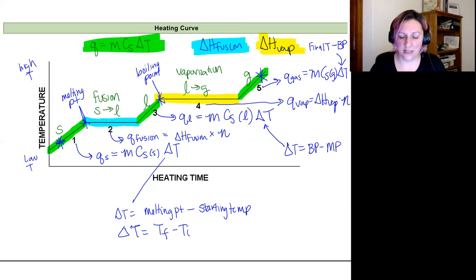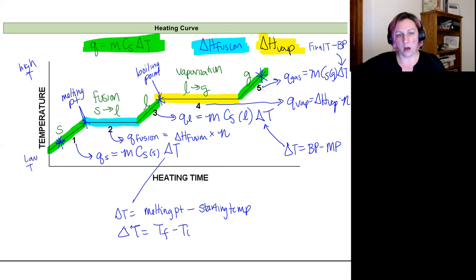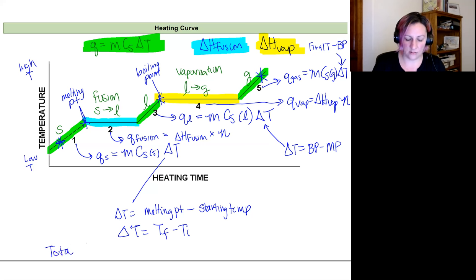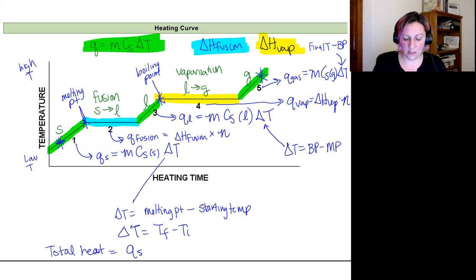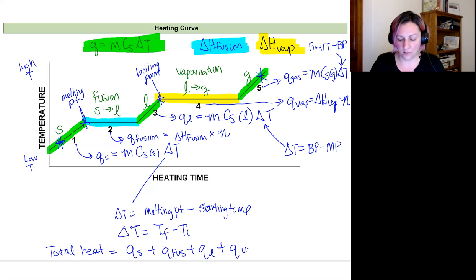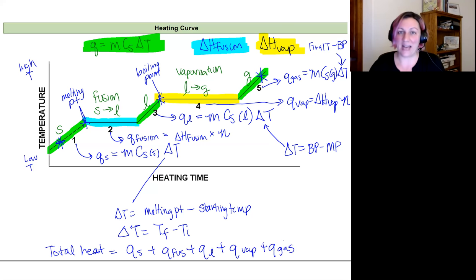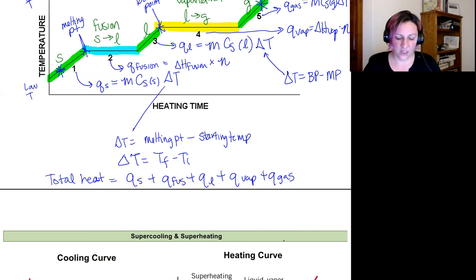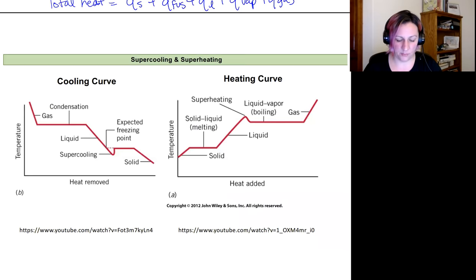That's a rough outline of the longest possible scenario. Once you have all those values calculated, the total heat or total energy needed equals q_solid + q_fusion + q_liquid + q_vaporization + q_gas. At the very end you add all of them up. We'll go through an example, but first I want to point out something about heating and cooling curves.